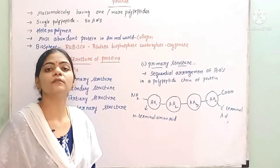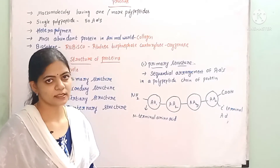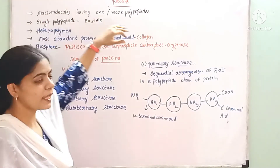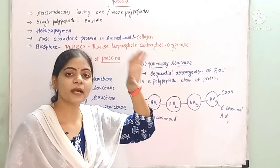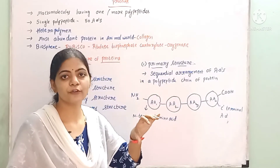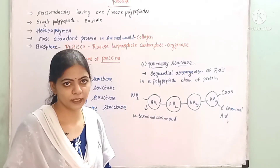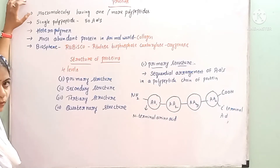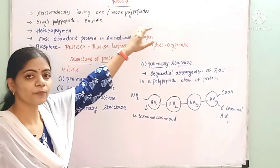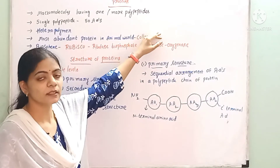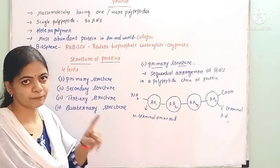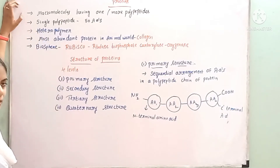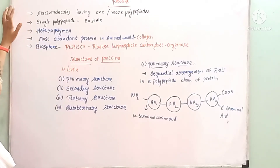Proteins are formed by amino acids. Proteins are called macromolecules. The amino acids are the micromolecules, and these proteins are formed by the subunits of the amino acids only. Hence, proteins are the macromolecules. They have one or more polypeptides, because different amino acids form a polypeptide chain. The proteins consist of one or more polypeptide chains, hence it is a bio-macromolecule.